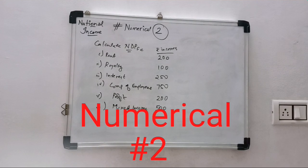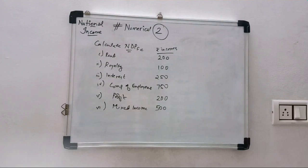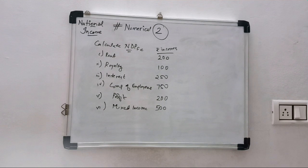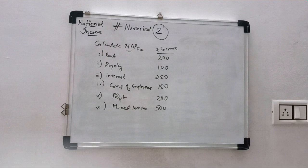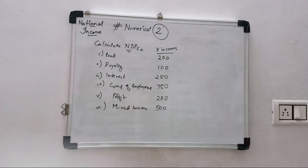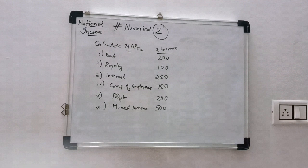So this is numerical two of national income. Calculate NDPFC. The given information is: rent rupees 200 crores, royalty 100 crores, interest 250 crores, compensation of employees 750, profit 200, and mixed income is 500. So try this question.